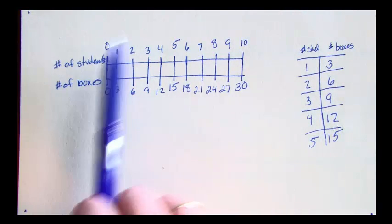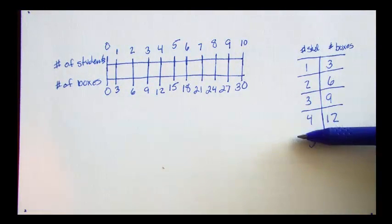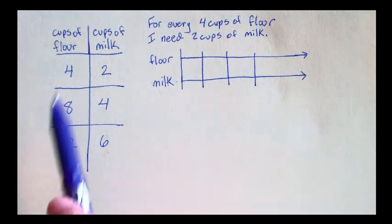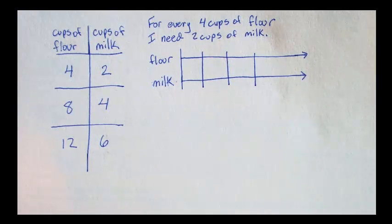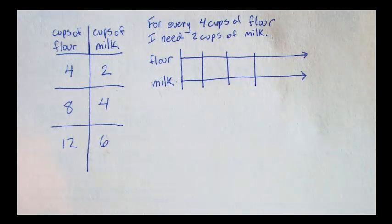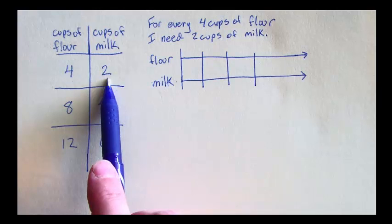Double number lines are very useful for showing information between information that's in your table. Here's another example of a table turned into a double number line. I'm making pancakes and my recipe says, for every 4 cups of flour, I need 2 cups of milk. 4 cups of flour, 2 cups of milk.